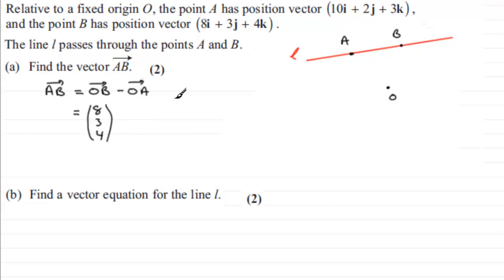and then minus O to A so O to A 10 2 3 so we've got 10 2 3 and then all we've got to do is subtract the components so what we've got is 8 minus 10 which is minus 2, 3 minus 2 which is 1, and 4 minus 3 which is also 1 and you could leave it like that it's fine to leave it like that